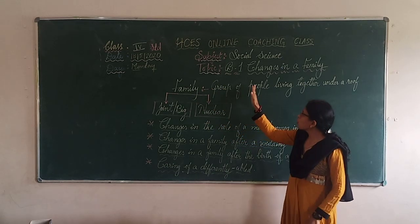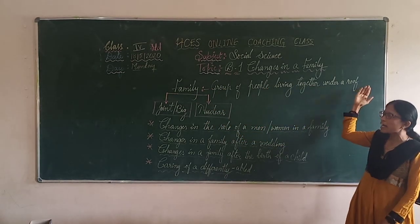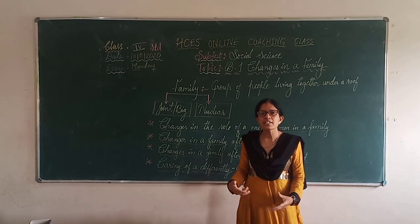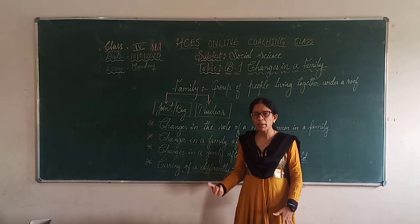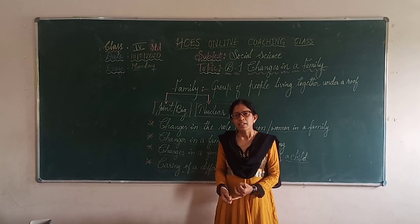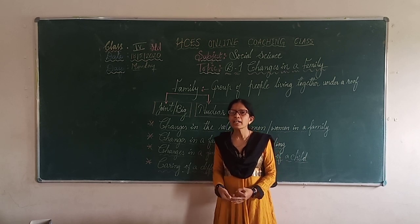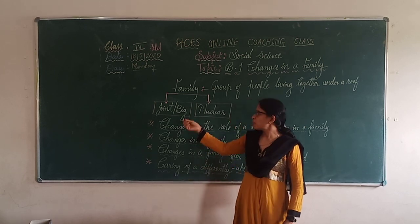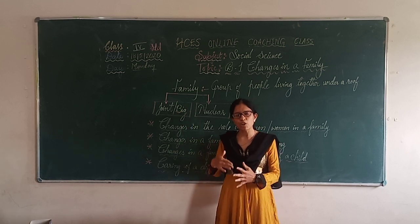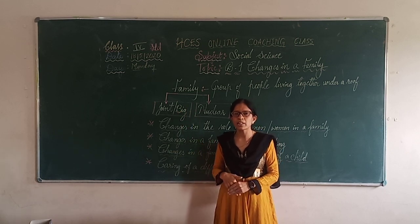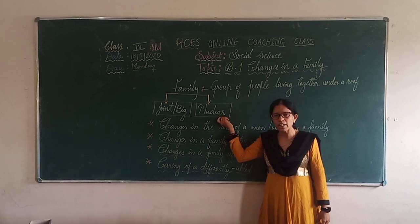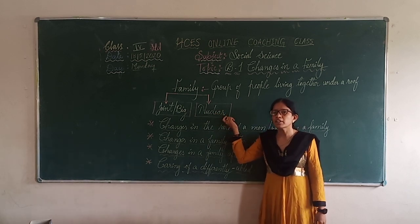Our family is a group of people living together under a roof. Families change over time. Some may grow bigger with grandparents, parents, cousins, uncle, and aunt — that type of family is called a joint or big family. And some families grow smaller with only parents and one or two children. Such families are called a nuclear family.